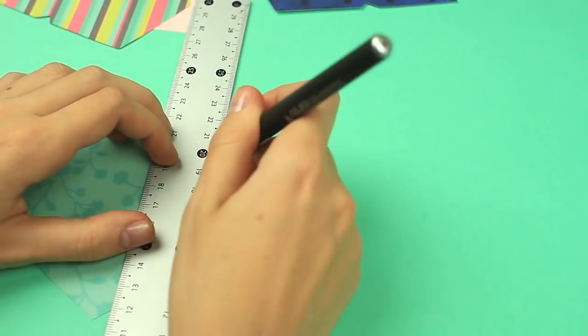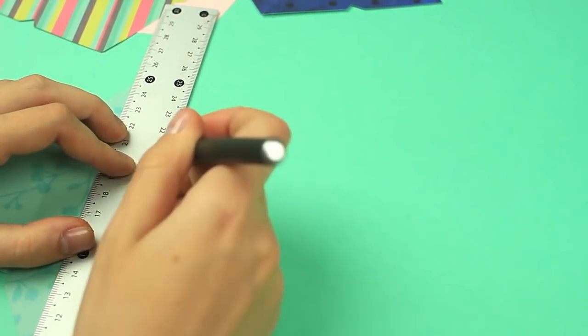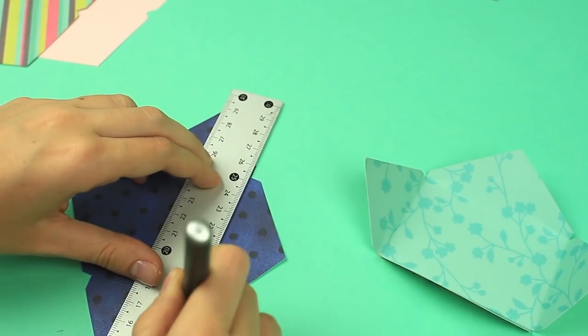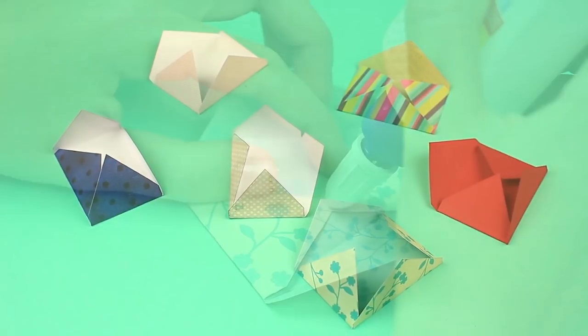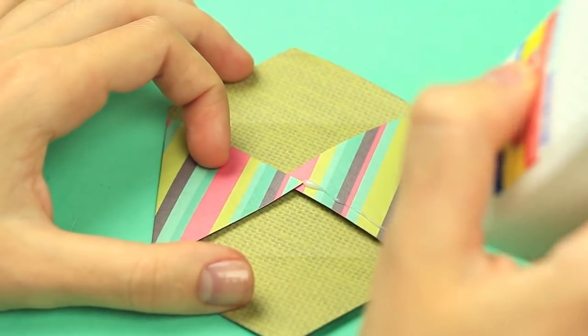Score the folding lines with some scoring tool, an empty ballpoint pen for example. Fold up. Repeat for the other elements. Attach the flaps using white glue. Make other envelopes in the same way.